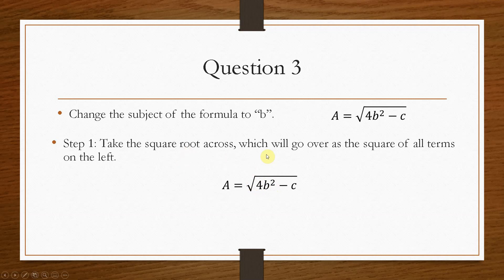So we have to take the square root across. Now that means that when that goes across, it goes over as a square. So it's going to square the a. So we get a squared equals, now the square root sign disappears from here, and we're just left with what was underneath. It's 4b squared minus c.